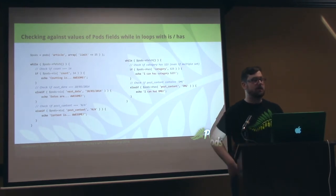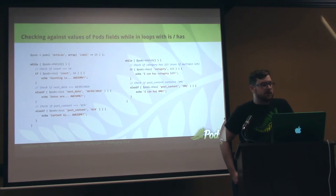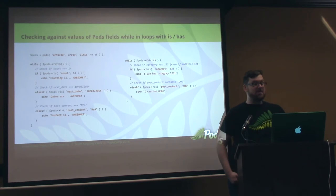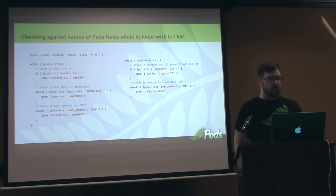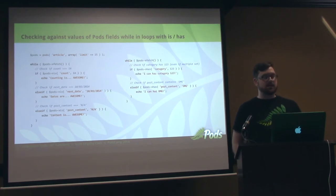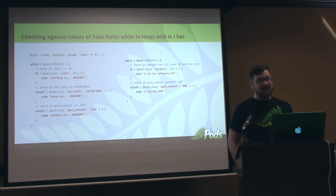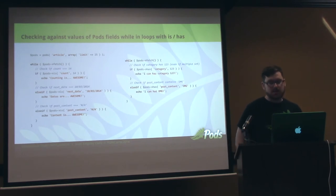There's also Is and Has — those are really useful as well. I like these because they're condensed versions of checking if a value equals something, but in a normalized way. I can check if the count is 14 without getting the field value and checking it separately — just shorthand. Is runs one method instead of one method plus an equality check. Same for date, same for content. Has is similar, except it's not an exact match: if I say pod Is category 1,2,3, I'm checking if this article is only those categories. But with Has, I check if it contains 1,2,3 among any of its categories. You can also check if post content contains a string value.